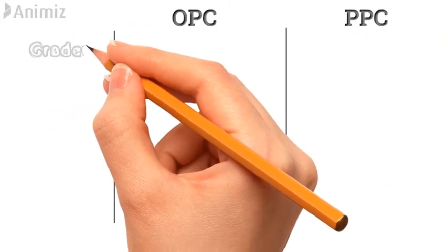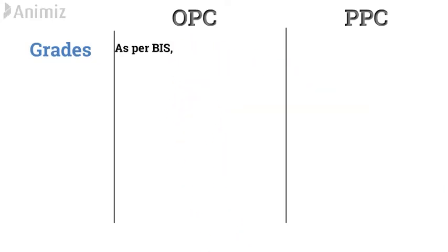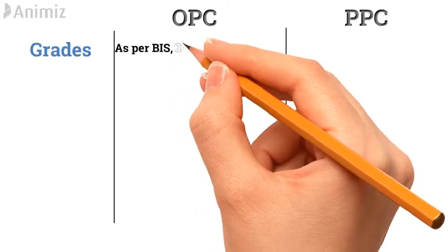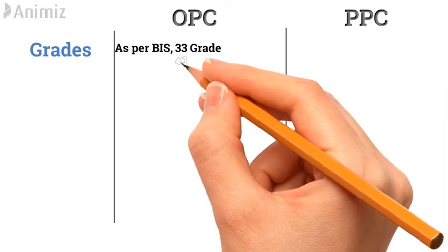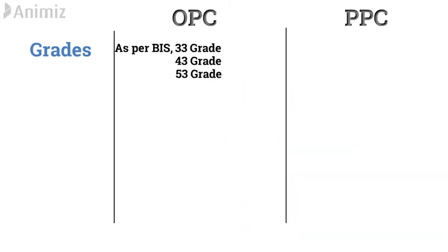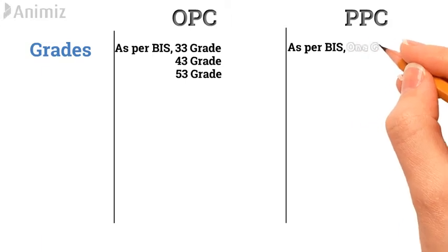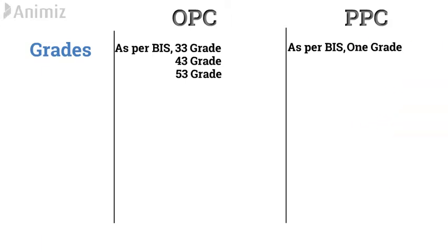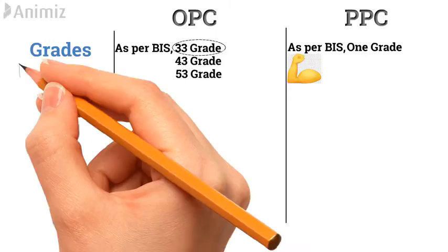Grades: As per the classification of the Bureau of Indian Standards, OPC is available in 33 grade, 43 grade, and 53 grade. Whereas, as per the Bureau of Indian Standards, PPC is available in 1 grade, and its strength matches the strength of 33 grade OPC after curing.